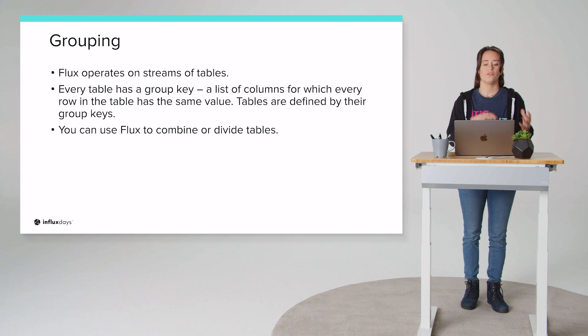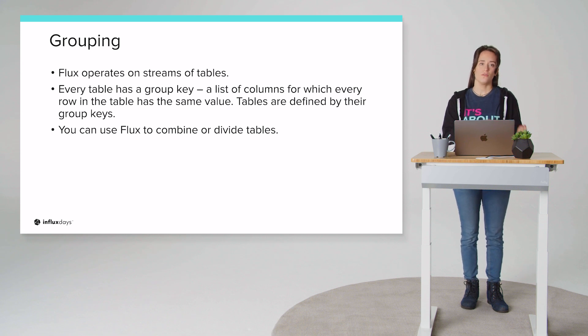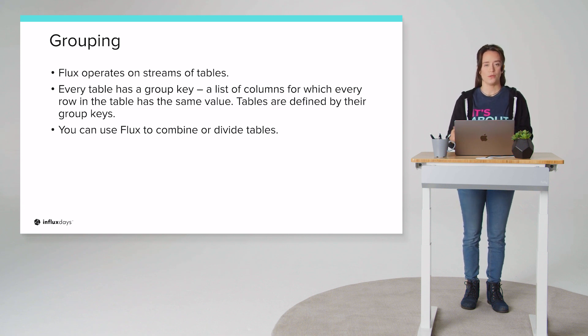So what does that mean? Well, Flux operates on stream of tables. Hopefully we understand that now. And every table has a group key. And what is a group key? A group key is a list of columns for which every record in that column is identical. And you can use Flux to combine those columns or those tables. You can use Flux to divide the tables, join the tables. And by changing these group keys, you can change the number of tables that are in the result stream with Flux.